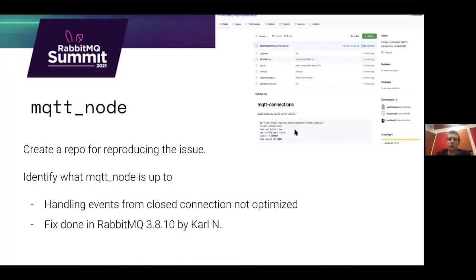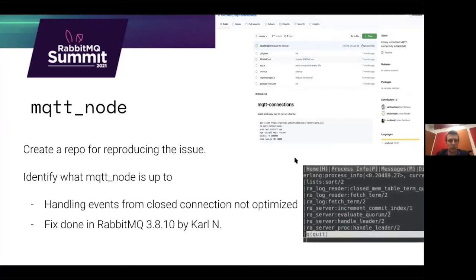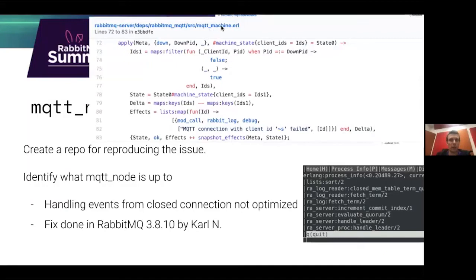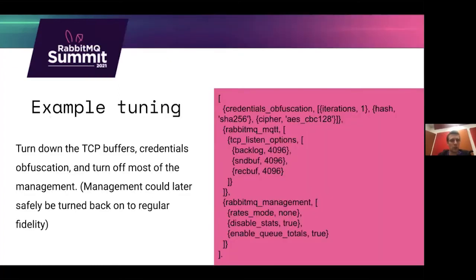That repo creates a lot of connections and recreates the scenario. Using it, we can look at the stack trace and see what MQTT node is up to, and identify which part is handling things. It turned out the MQTT machine's handling of connection teardowns wasn't very optimized. We had this in discussion and Karl Nielsen fixed it — big shout out to him for finding and fixing that issue.